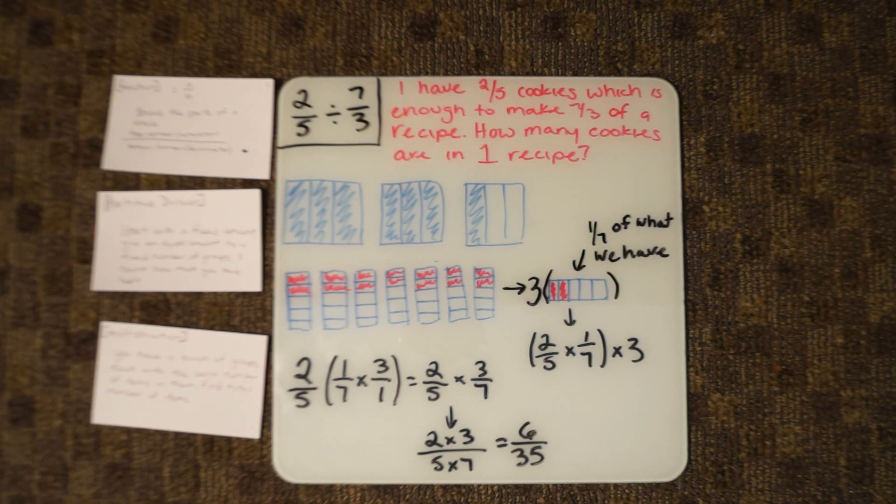Today we'll be working on fraction partitive division. Partitive division means that you start with a fixed amount, give it equal amount to a fixed number of groups, and count how much you have left.